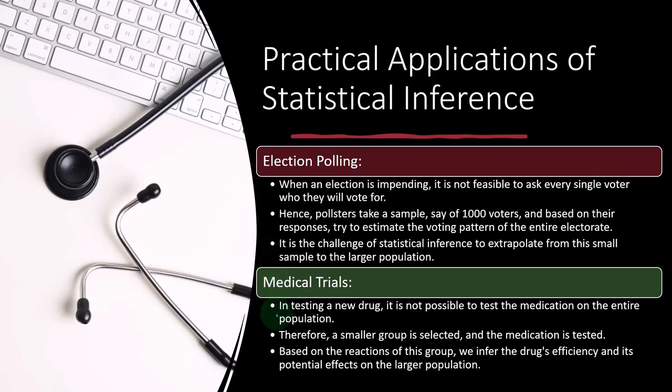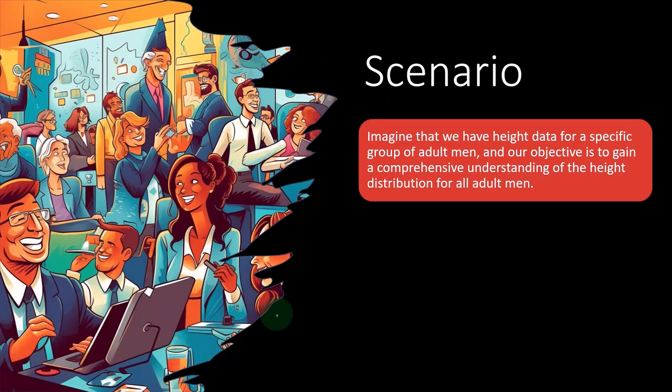Let's take a look at a scenario. Imagine that we have height data for a specific group of adult men, and our objective is to gain a comprehensive understanding of the height distribution for all adult men. Height is a good one to use when you're first looking at the concept of this inference type of analysis.